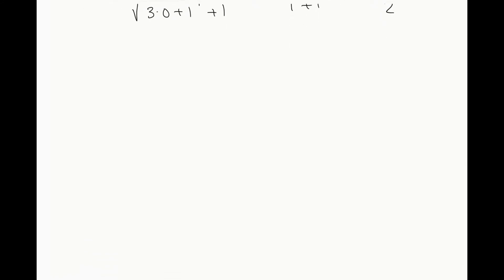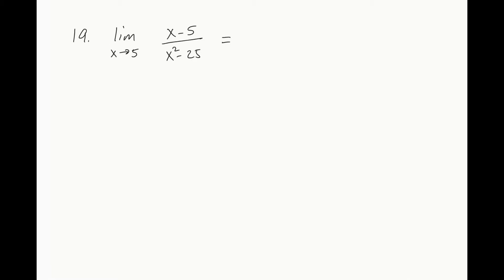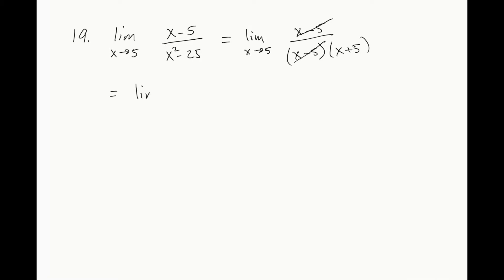I will do another example — number 19. This problem is a bit easier; we can immediately see that we are a short step away from getting our common factor. Factoring out the denominator, we get (x minus 5)(x plus 5). The numerator and denominator have common factor (x minus 5), so they cancel out. And we have the limit as x goes to 5 of 1 over (x plus 5). Using substitution, this limit is equal to 1 over (5 plus 5), which is 1 over 10.